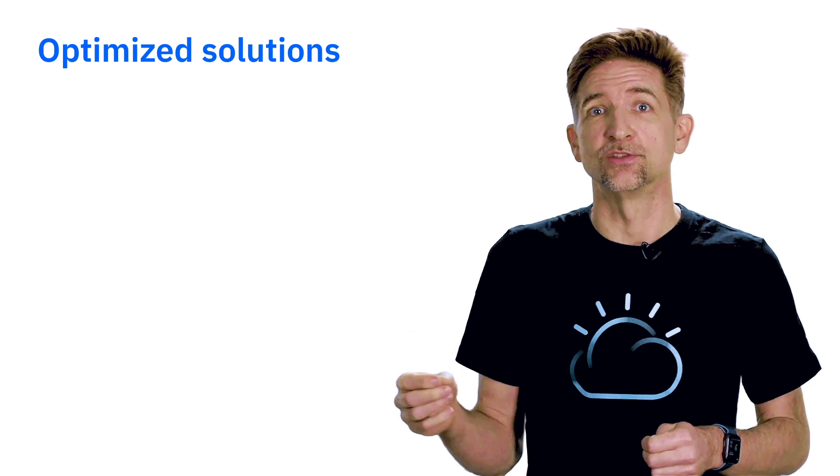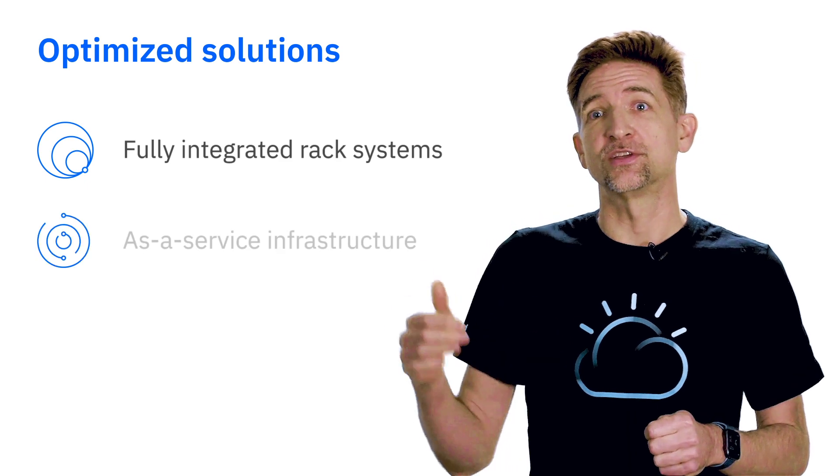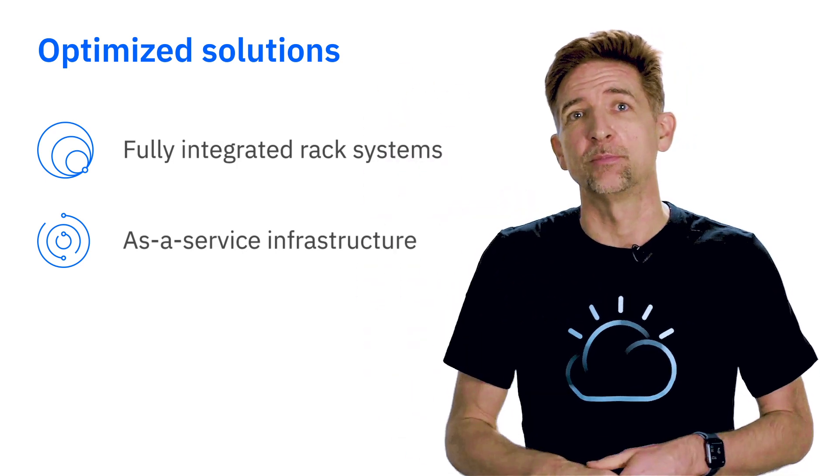We're also going to provide optimized solutions — fully integrated rack systems from IBM and from partners — and as-a-service infrastructure capabilities where we can run the entire stack for you, from hardware through infrastructure up into platform and SaaS applications. You can consume infrastructure with what you have, build new environments, or run multi-cloud environments across IBM cloud and other public cloud providers. Locations and Link allow us to extend our cloud catalog services to any location, giving you the power of IBM cloud anywhere in the world. All you need is some Linux infrastructure and IBM does the rest.